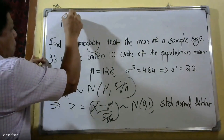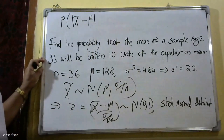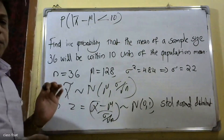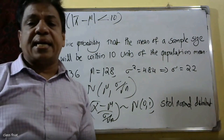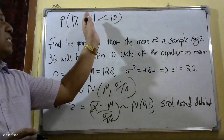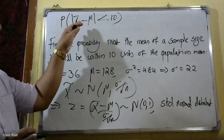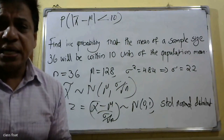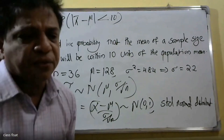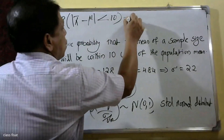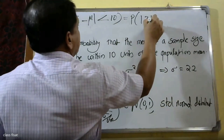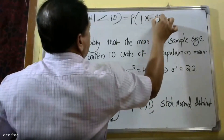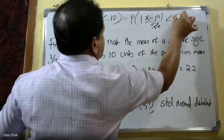The probability that the modulus of x̄ minus mu is within 10 units: probability of |x̄ minus mu| less than 10.